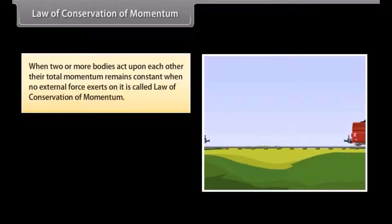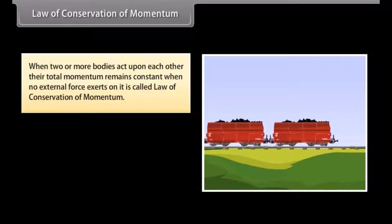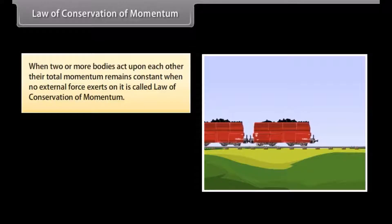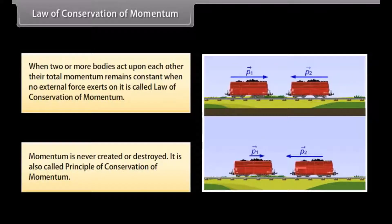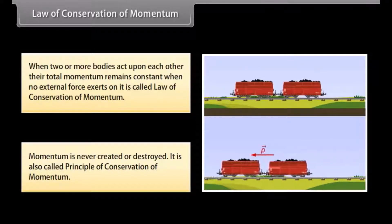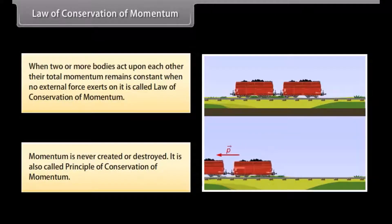When two or more bodies act upon each other, their total momentum remains constant when no external force exerts on it. This is called law of conservation of momentum. Momentum is never created or destroyed. It is also called principle of conservation of momentum.